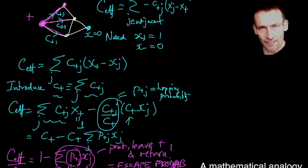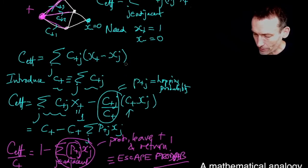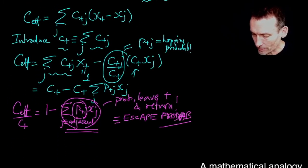And we've already decided that that's what we call the escape probability. So Ceff, the effective conductance in the electric circuit, divided by C plus, which is the sum of the conductances of the edges leaving the plus node, is equal to the escape probability. That's an extremely important observation.